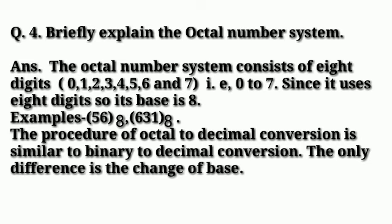Now the fourth question is briefly explain the octal number system. Answer: the octal number system consists of 8 digits: 0, 1, 2, 3, 4, 5, 6, 7, that is 0 to 7. Since it uses 8 digits, so its base is 8.